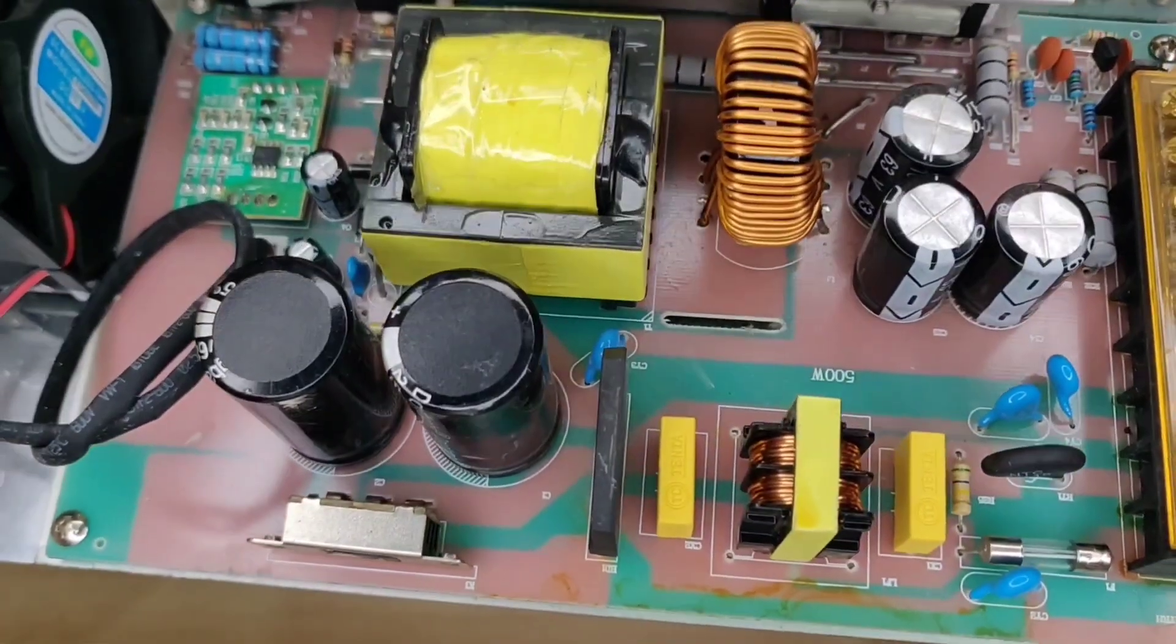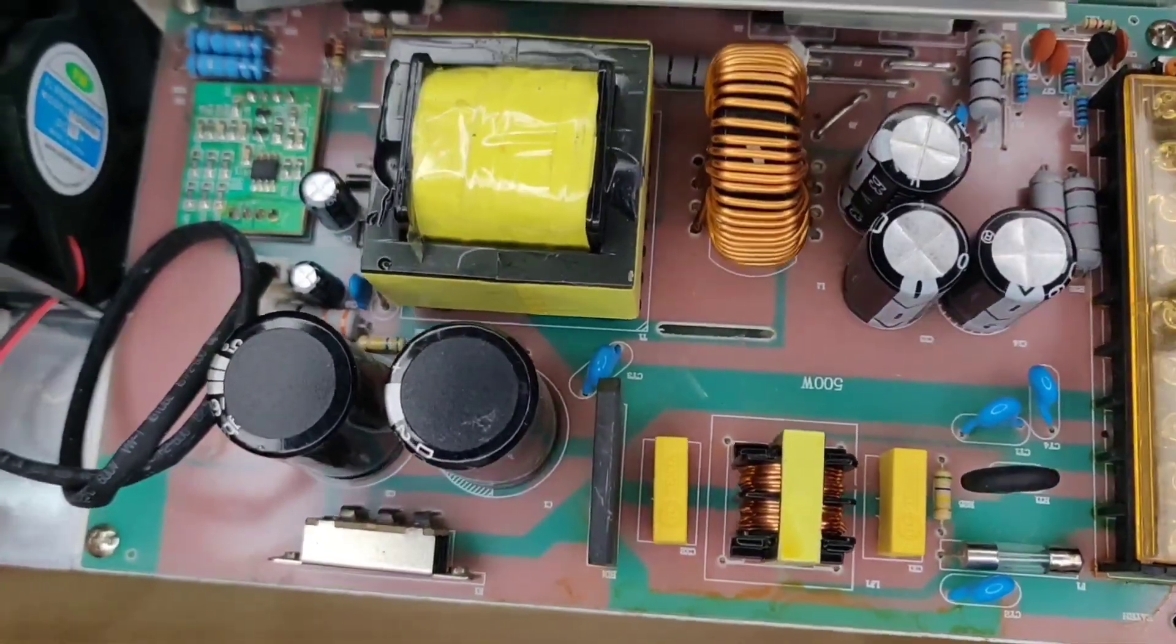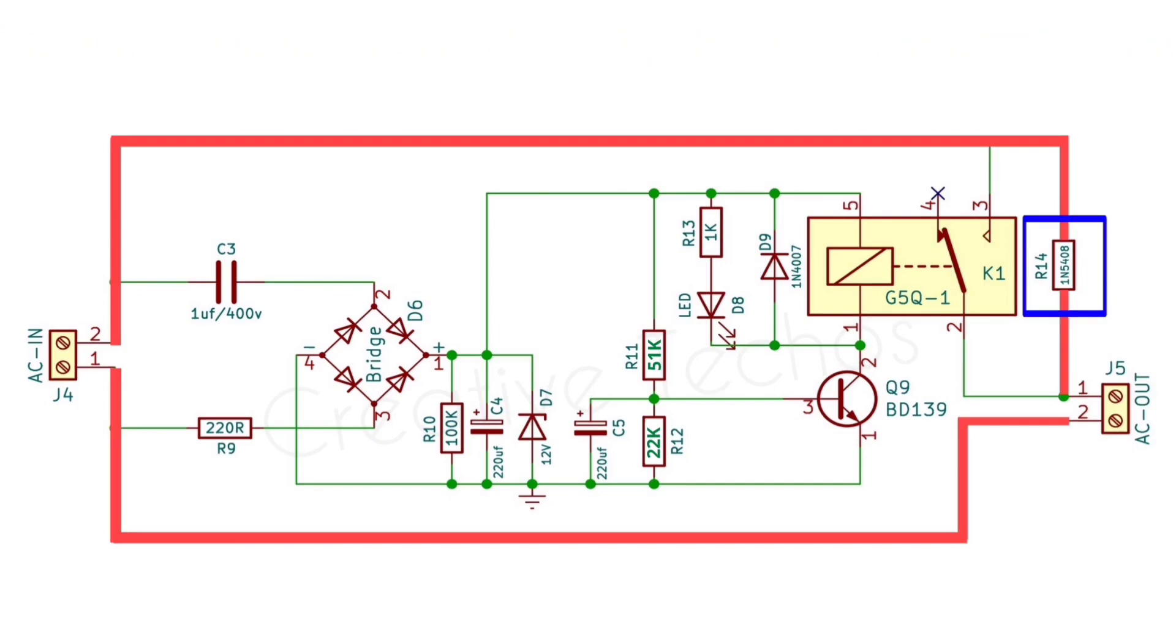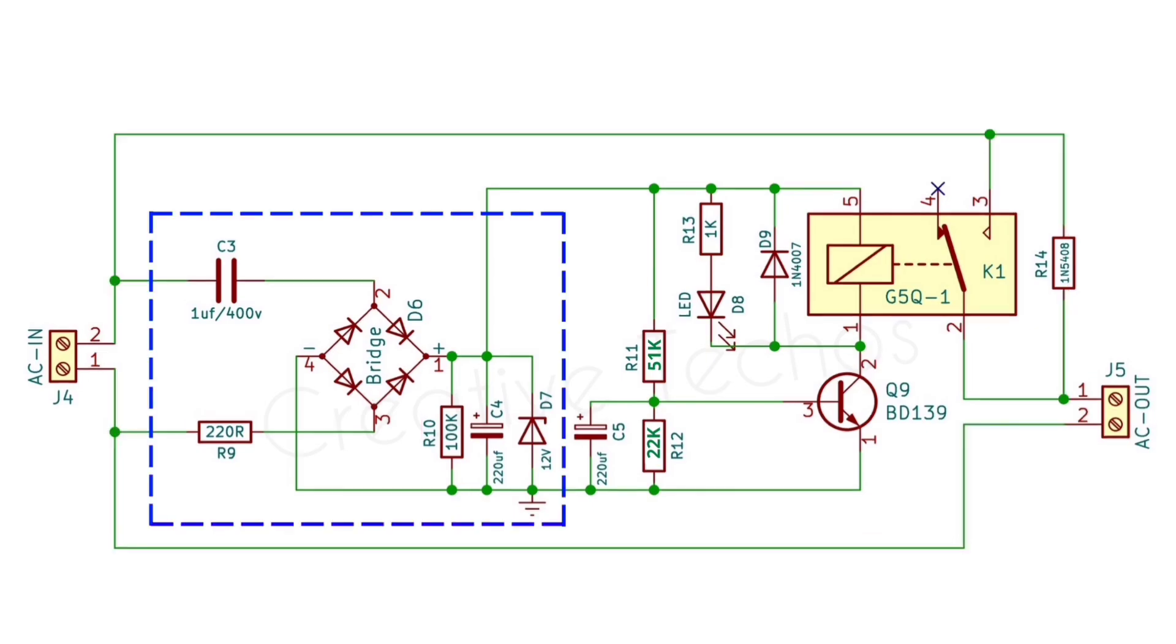For protection by limiting the inrush current to any circuit or appliances, I designed a protection soft starter circuit on simple working principle. When we switch on AC at input, the appliance connected on output gets limited amount of initial current through this limiting resistor. At the same time, this transformerless power supply gets to work.